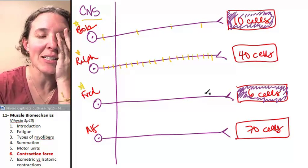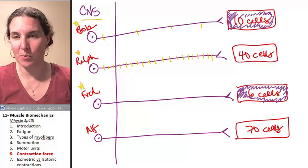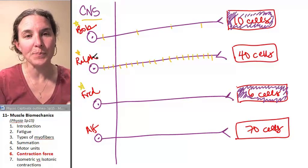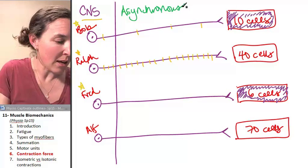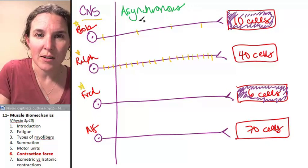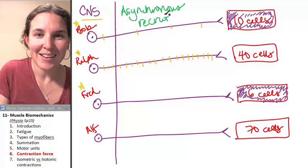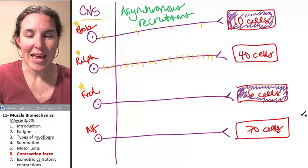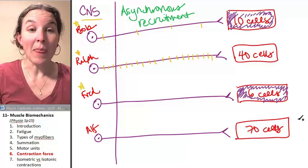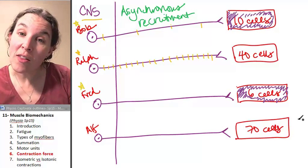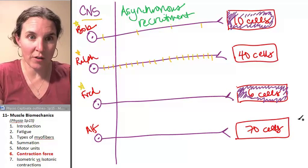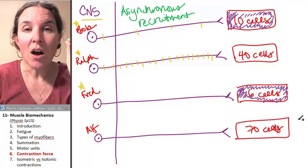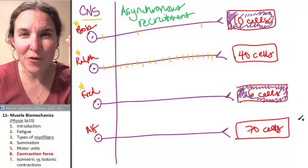And then this part is the part that just blows my mind apart into a million pieces. The central nervous system will do something called asynchronous firing. Synchronous, asynchronous recruitment. Asynchronous recruitment means that all the motor units that are affecting a certain muscle that the central nervous system has decided needs to contract,